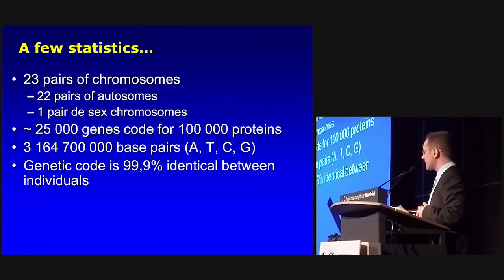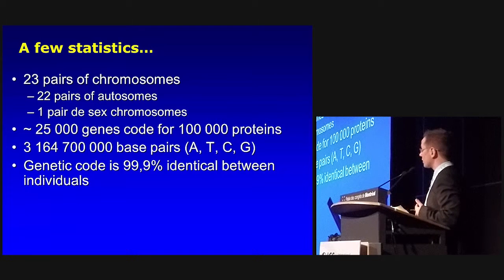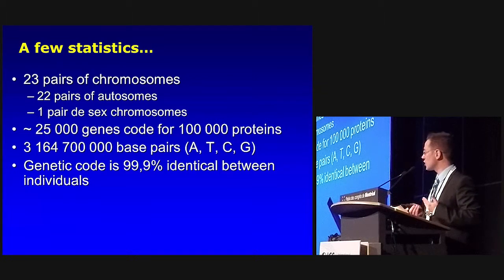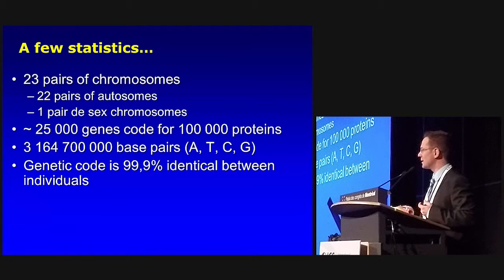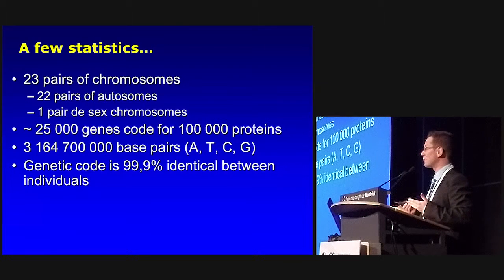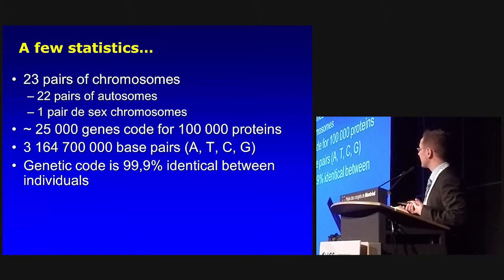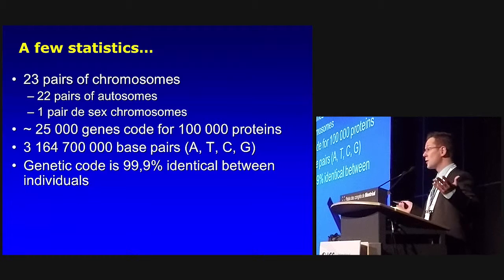A few basic statistics: we all have 23 pairs of chromosomes — pairs because one comes from your mother and one from your father — 22 pairs of autosomes and one pair of sex chromosomes. Our genome is made of approximately 25,000 genes, which code for 100,000 proteins. The basic code for these genes consists of four base pairs in excess of 3 billion in the genome: adenine, thymine, cytosine, and guanine. Even though we are all similar up to 99.9%, given that 0.1% is out of 3 billion base pairs, it explains the important phenotypic differences — the differences in the traits we observe both clinically and in everyday life.